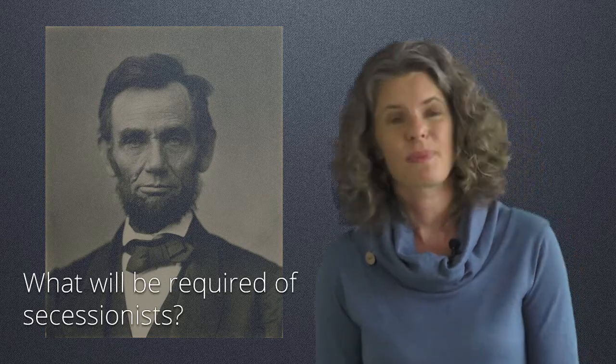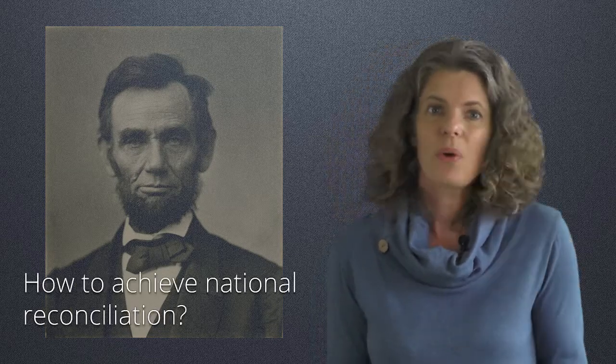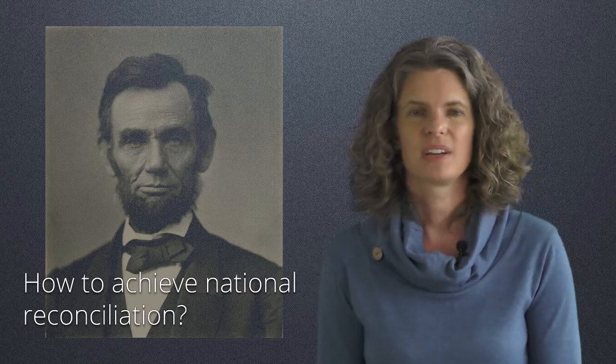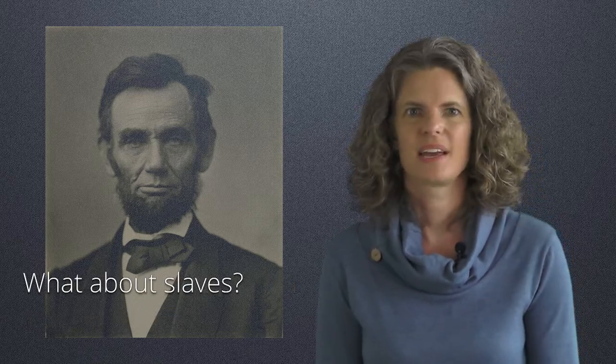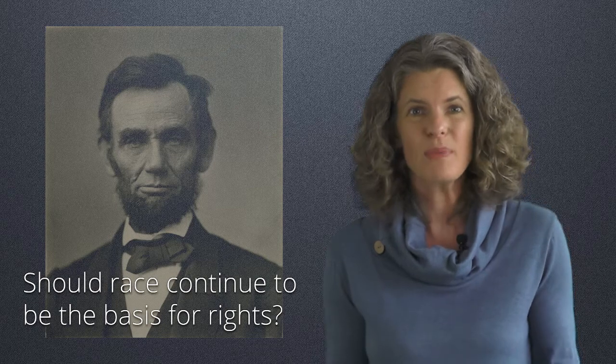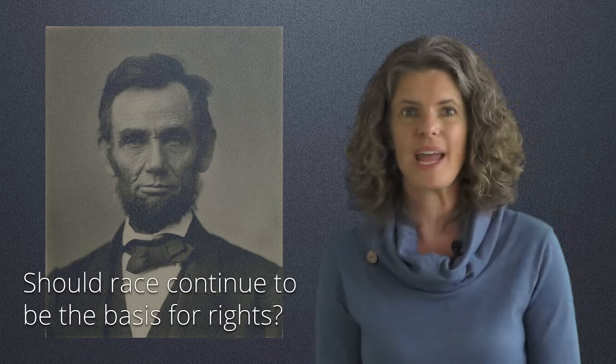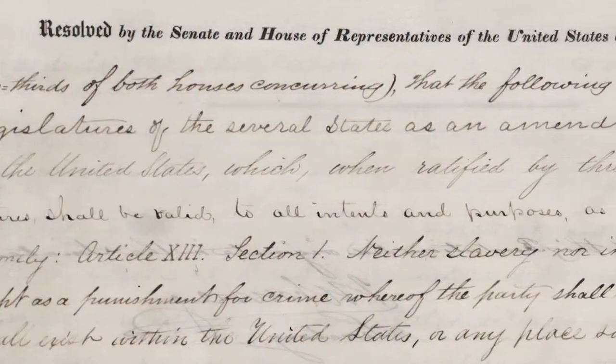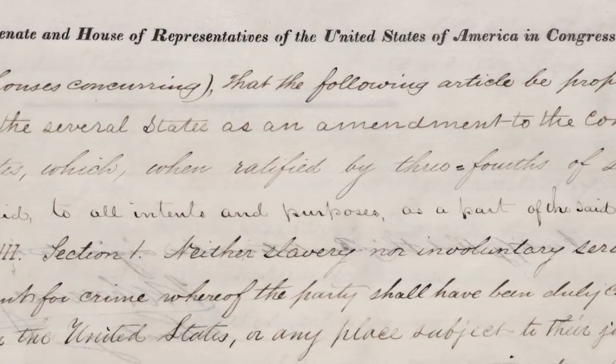As it became apparent in 1864 and 1865 that the North would win the Civil War, Abraham Lincoln turned his attention to the post-war nation. On what basis would secessionists be allowed back in the Union? What would be the conditions for national reconciliation? What about slaves? And was this the moment to erase race as a basis for rights? When Abraham Lincoln was assassinated in April 1865, the slavery question had one clear answer. The 13th Amendment passed before Lincoln's death abolished slavery.